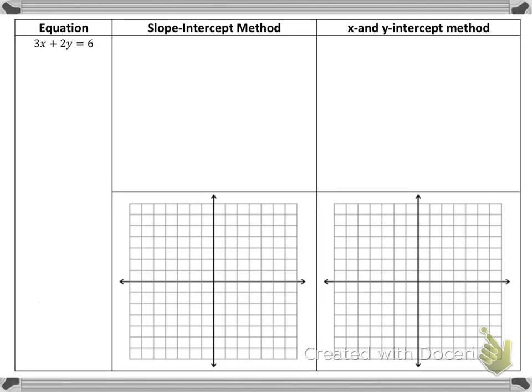Our first example is 3X plus 2Y equals 6. Now, just looking at that equation, can you tell me what the slope and the Y-intercept is? Probably not. The reason you can't is because it doesn't look like Y equals MX plus B. So this is our goal. We're trying to get this equation, 3X plus 2Y equals 6, to look like Y equals MX plus B. So we need to isolate our Y variable. To begin doing that, I'm going to subtract 3X from both sides.